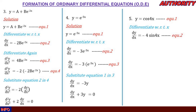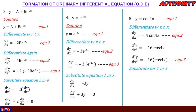Differentiating dy/dx = −4·sin(4x) again: d²y/dx² = −16·cos(4x). Factoring: d²y/dx² = −16·[cos(4x)]. Since y = cos(4x) from equation 1, we substitute: d²y/dx² = −16y. Rearranging: d²y/dx² + 16y = 0. This is the differential equation corresponding to y = cos(4x).